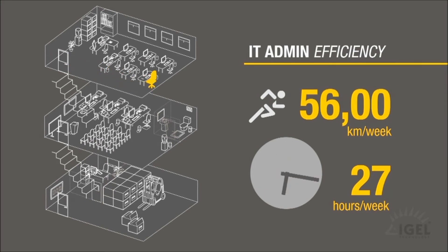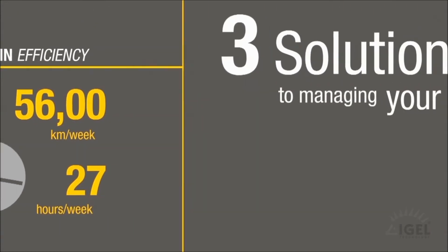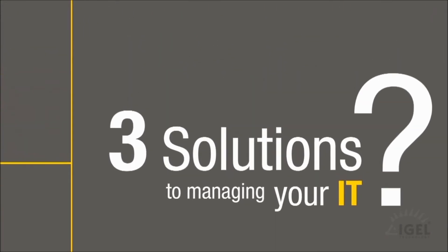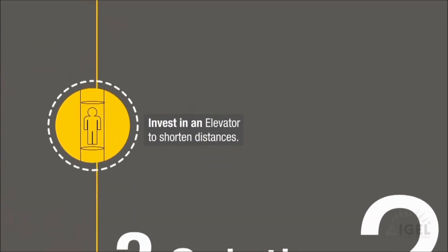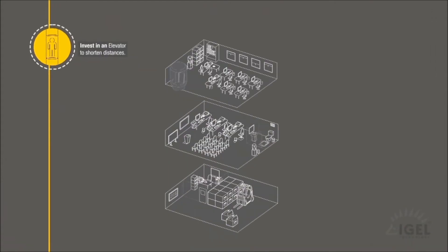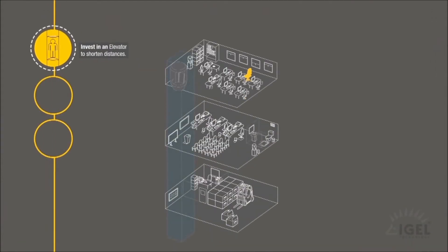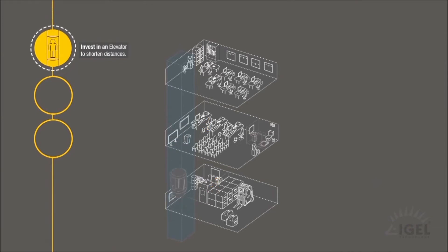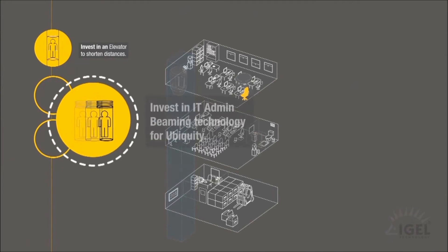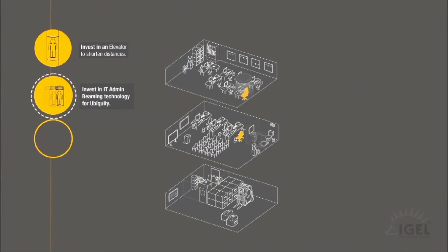Now this amounts to 56 kilometers and 27 hours a week of wasted time and effort. And how about all the sneakers you wear out? You ask how to tackle this inefficiency. Here are three solutions. Build an elevator in the building — this not only increases mobility speed, but lets you save on footwear. Or invest in beaming technologies in order to send your admins all over the place whenever needed.